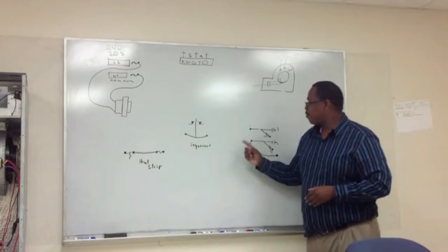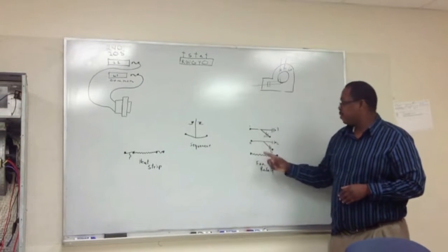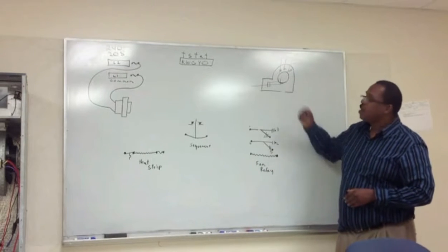So the sequencer is going to control our what? E-strip. Our fan relay is going to control what? Fan. Our fan.